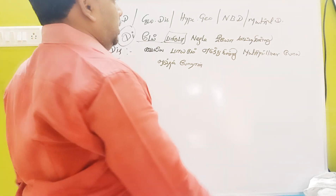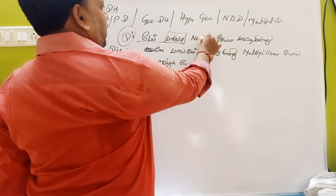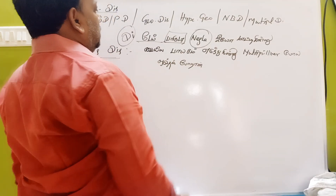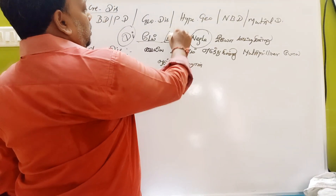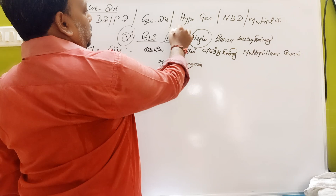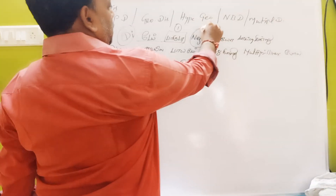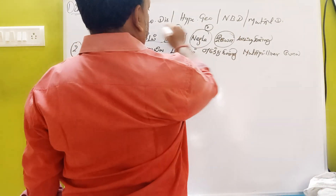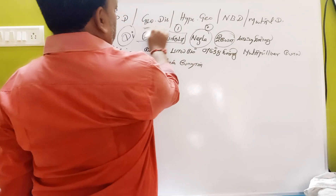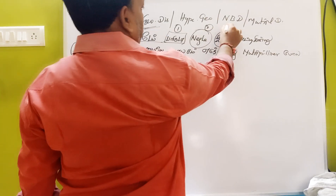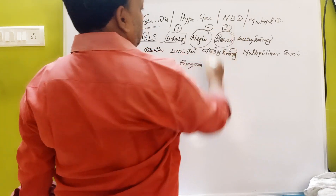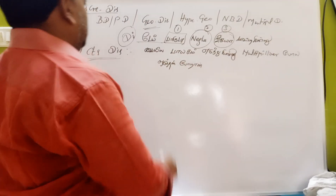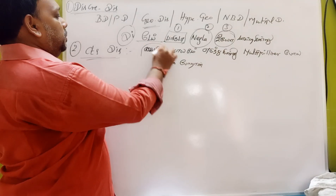Negative Binomial Distribution. For the Hypergeometric. Geometric distribution. Binomial distribution.